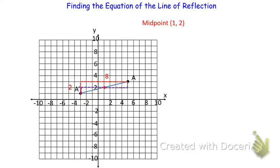The midpoint is at (1, 2). Now let's find the slope of this segment. Its rise is 2 and its run is 8. Therefore, the slope is 2/8, which reduces to 1/4.